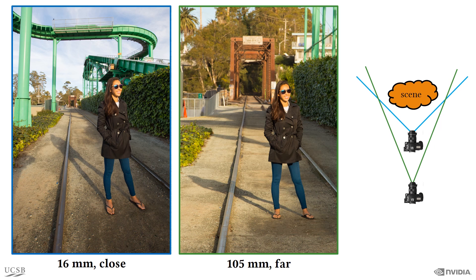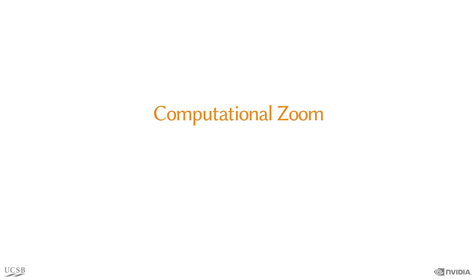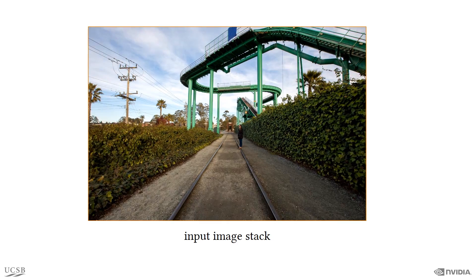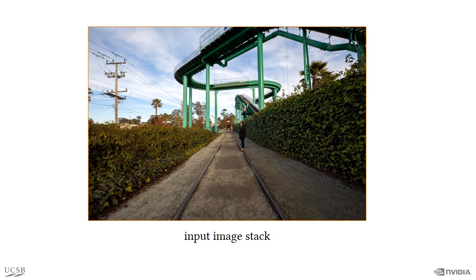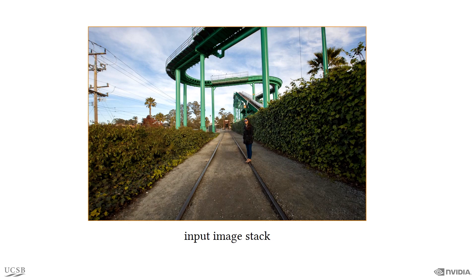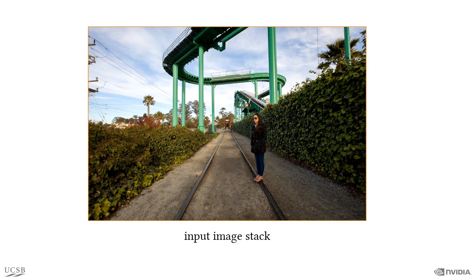We propose to change this paradigm with a new framework we call computational zoom, which allows the photographer post-capture control on the sense of depth of a scene, the relative magnification of objects at different depths, and the amount of perspective distortion. We take as input a stack of pictures by moving the camera into the scene without changing the focal length of the lens.